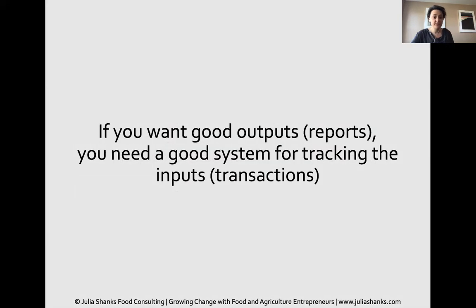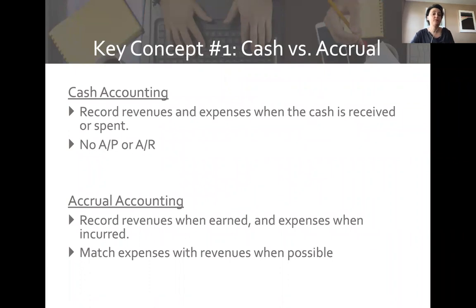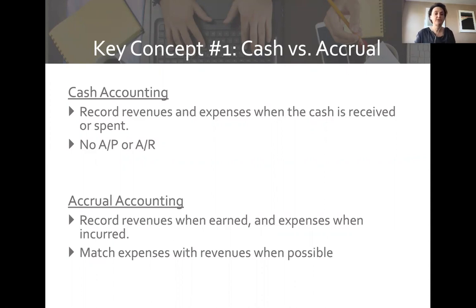If we want good outputs we need a good system for tracking the inputs. One of the biggest confusing points is the difference between cash and accrual accounting. A lot of times when people think about bookkeeping systems they think accrual sounds really hard and cash seems much easier, but there are implications to your decision. I'm not going to say one is better than the other, but they are different and I want you to understand them.